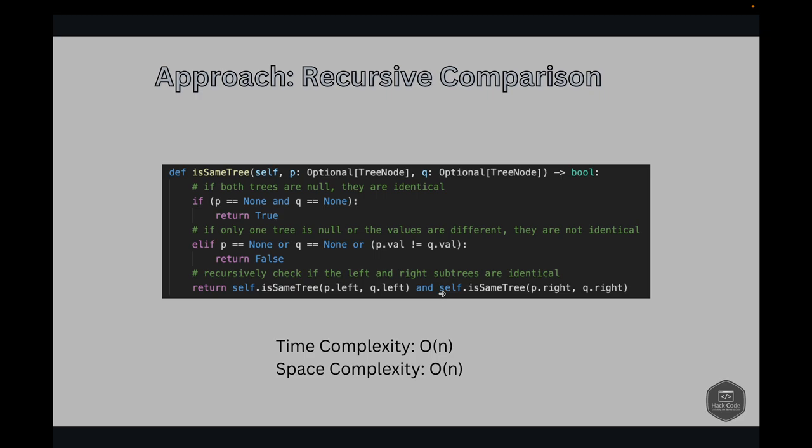This results in space complexity of O(n) as recursive calls consume space on the call stack. Best case scenario: in a perfectly balanced tree, the height is logarithmic with respect to the number of nodes, that is log n. Consequently, the space complexity reduces to O(log n) as recursion depth is limited by the height of the tree.